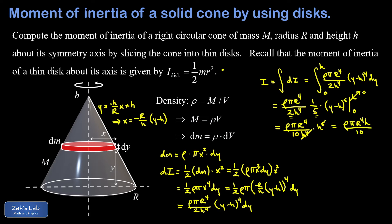We're not done yet because the goal is to express the moment of inertia in terms of the mass M and dimensions of the cone, not the density rho. So we write density as mass divided by volume, where the volume of a cone is one third·pi·R²·h. This gives rho equals 3M over pi·R²·h, which is easier to substitute in this non-complex-fraction form.